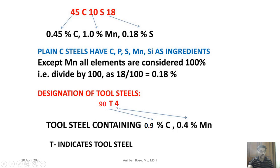For tool steel designation, consider the example where 'T' indicates it is a tool steel. For instance, T94 — here 'T' indicates it is a low-alloy tool steel, '90' indicates carbon percentage multiplied by 100 (so 0.9% carbon), and '4' indicates manganese percentage of 0.4%.